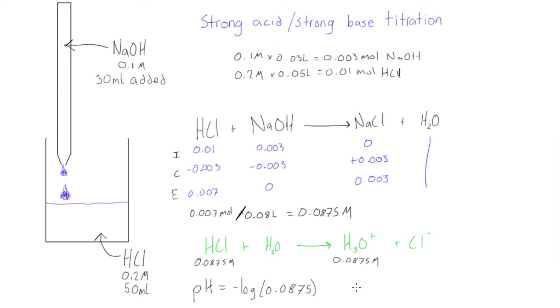And when we do that, when we enter this into our calculator, we are going to get our pH is now going to be equal to 1.06. Awesome. I'll see you in the next video and we'll do the pH when it's at the equivalence point.